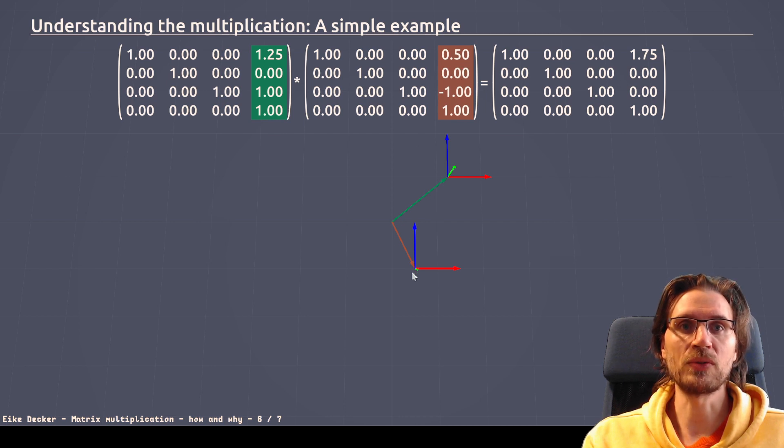This matrix is translating into that direction. So, half to the right, one to the bottom. Whereas, this one, the green one, goes 1.25 units to the right and one unit up. And the combination of those, because no rotation is involved, is fairly simple. It's this vector plus this vector, which leads us to this point.